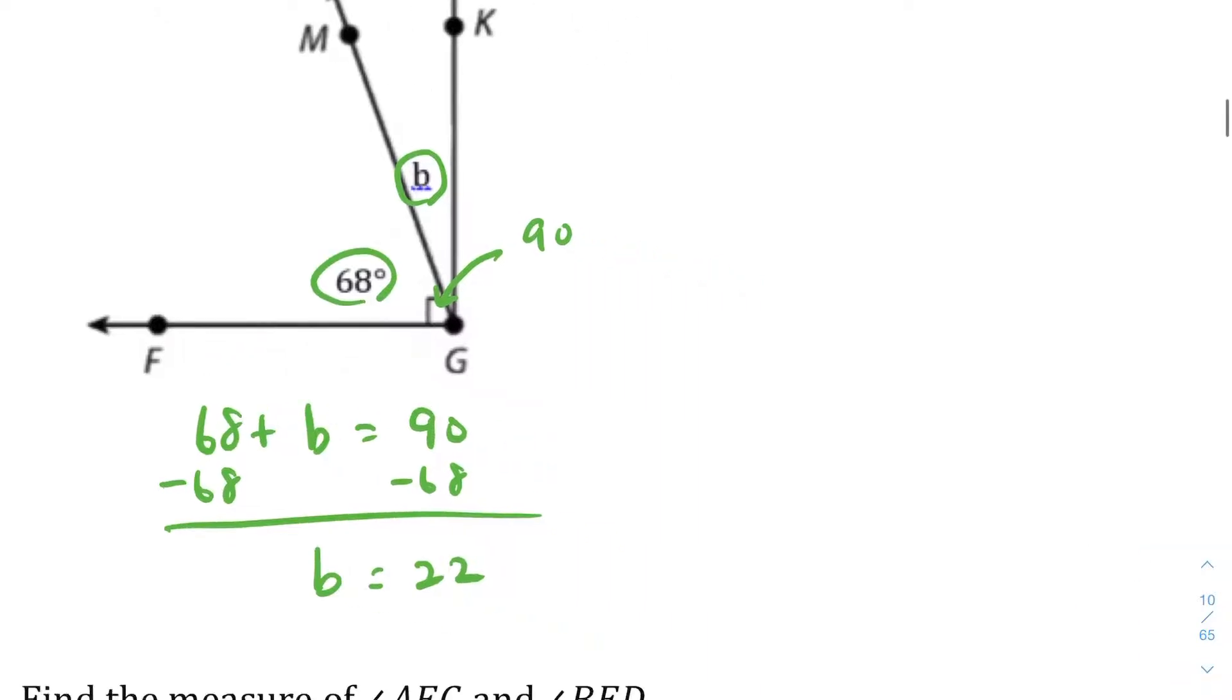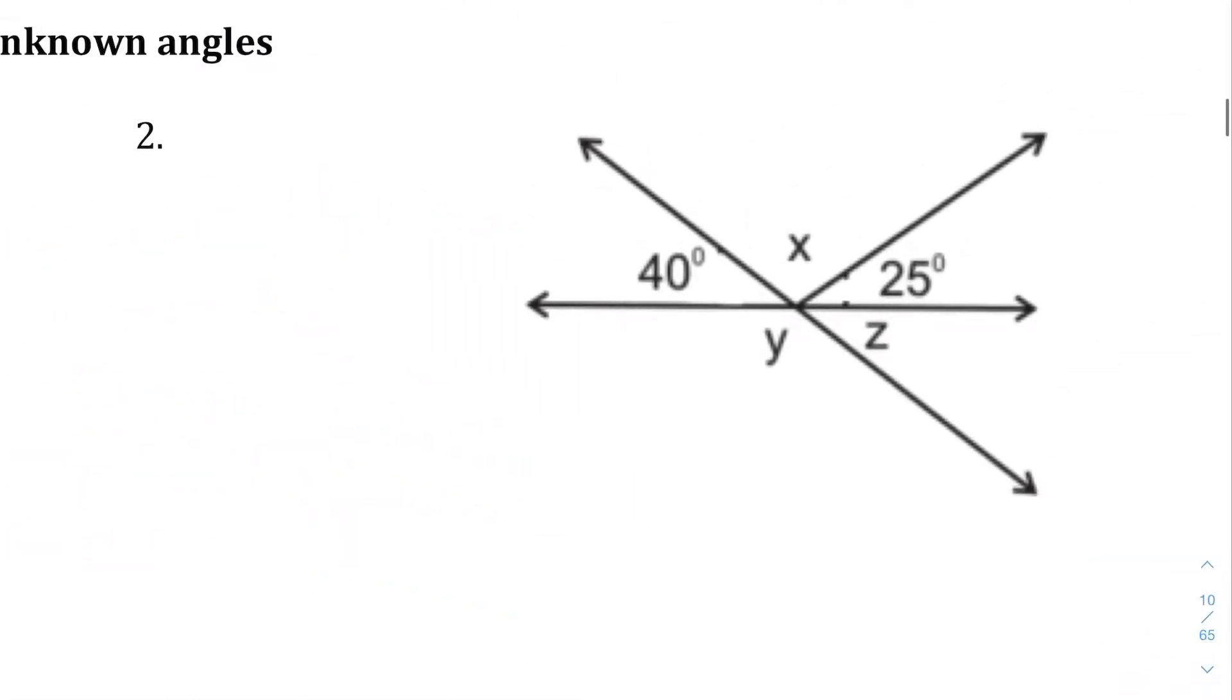Question number two, we're going to have to do a bunch of different things. We have to find x, y, and z. I'm going to color code this, just so we keep everything straight. We're going to start with x. To find x, we know that 40 degrees, x, and 25 degrees are all on this line here. Since it's a line, these are going to equal 180 degrees. The equation you should set up is 40 + x + 25 equals 180.